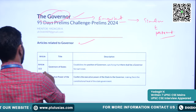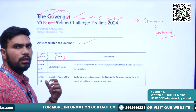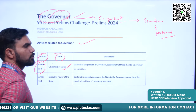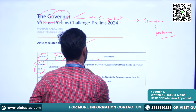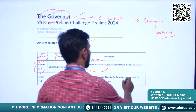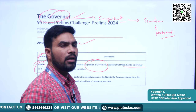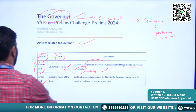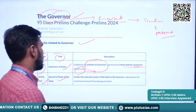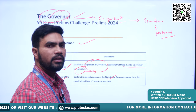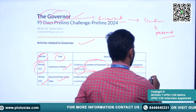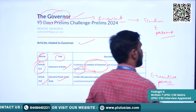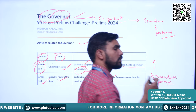We will start with the important articles related to the office of the Governor. Article 153 is about the Governors of the states — it establishes the position of Governor and says there shall be a Governor for each state. Article 154 deals with executive powers of the state — it confers the executive powers of the state on the Governor, similar to how executive powers of the Union are conferred on the President.